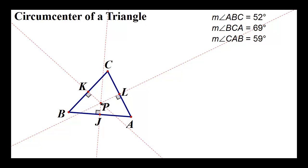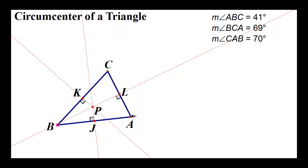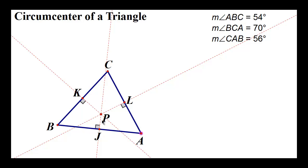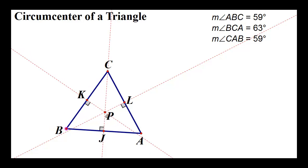When I stretch this out so we can see better, you'll notice that those three perpendicular bisectors all intersect at the same point — point P. That point is called the circumcenter. It's the center of the triangle formed by the intersection of the perpendicular bisectors of the sides.